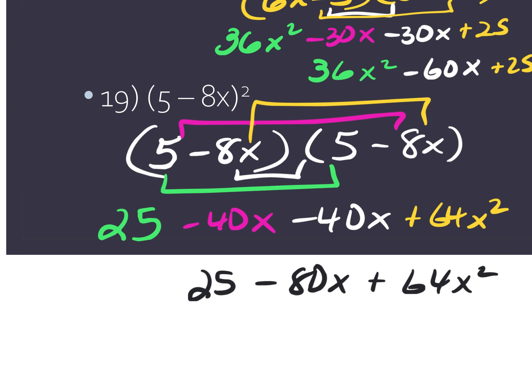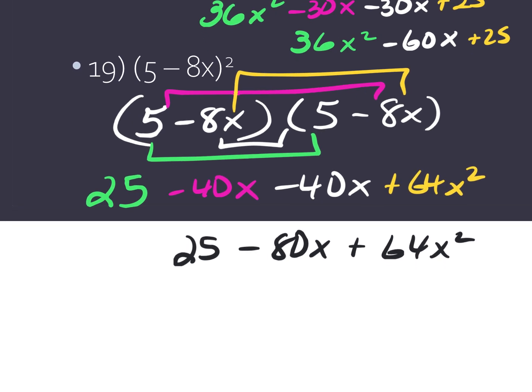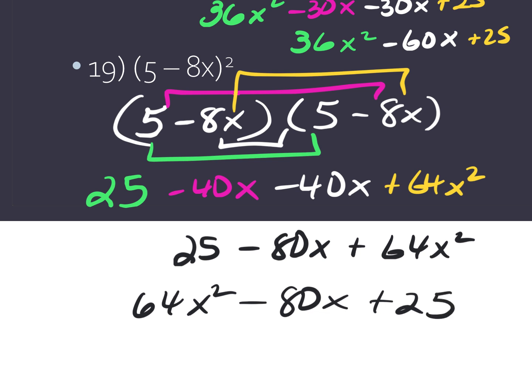Now, if the instructions do not say anything about standard form, that answer is perfectly acceptable. However, if it says 'leave your answer in standard form,' then I need to write the 64x squared first, then the 80x, and then the 25. It needs to be like a countdown with the largest exponent all the way down to the constant. But if it doesn't specify, either answer is acceptable.